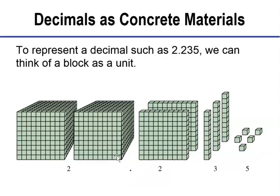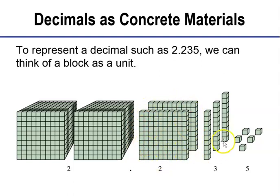To represent a decimal such as two and two hundred thirty-five thousandths, we can think of a block as a unit. This time we use the big giant block — there are a thousand units in there. To represent two and two hundred thirty-five thousandths, we'd have two large blocks for the whole number two, then two flats for two hundred (flats have a hundred in them), and then thirty-five thousandths. These base ten blocks can be used for a lot — you just redefine what your values are equal to.